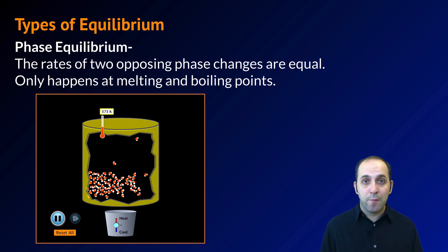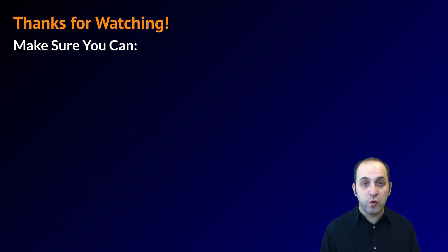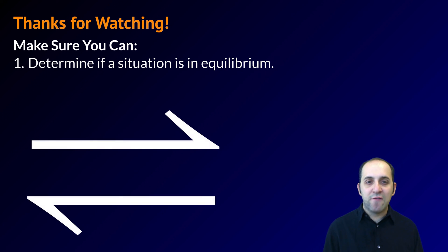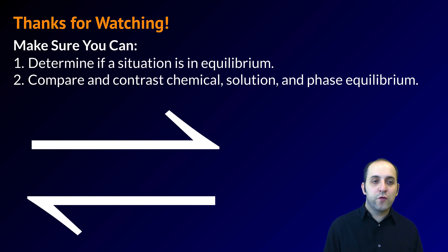If you have any questions about any of the equilibrium that we've talked about in this lesson, you definitely want to write them down before we wrap up. Thanks so much for watching this introduction to equilibrium systems. Make sure you can do the following things here at the end. Make sure that you can determine if a situation is in equilibrium. Is that double arrow present? Are we talking about a saturated solution? Are we at a substance's phase change point?